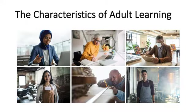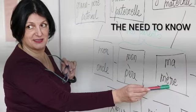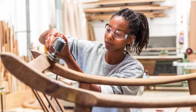For Knowles, adult learning was premised on the following characteristics. The need to know: adults want to know why they need to learn something. They ask, 'Why do I need to know this, or why is this important?' Adults want to understand the value.